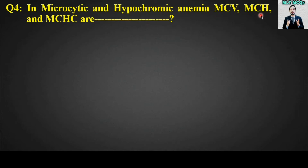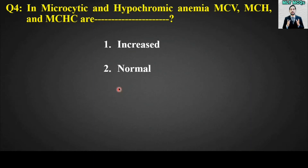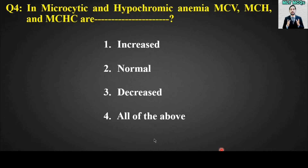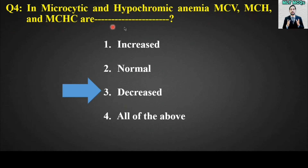MCQ number four: In microcytic and hypochromic anemia, MCV, MCH, and MCHC are blank. Options are: increased, normal, decreased, or all of the above. The right answer is option number three — decreased. In microcytic and hypochromic anemia, MCV, MCH, and MCHC are all decreased.